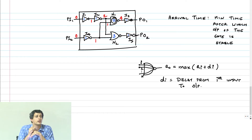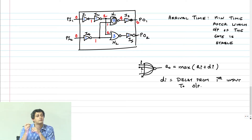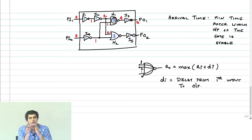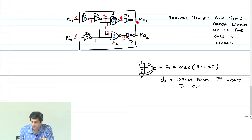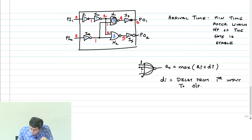The arrival time at the output of I3 is 5. The arrival time here is 2. What is the arrival time at the output of N2? You have to do 2 plus 3 and 1 plus 3 and take the max, so you get 5. What is the arrival time at the primary output PO2? It is 6.